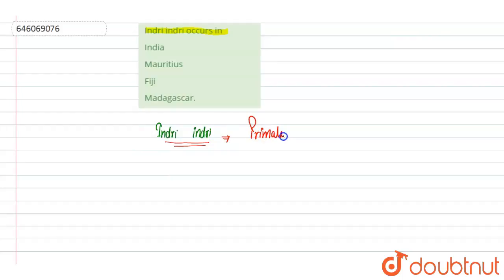It is one of the largest living lemurs. If you'll see the morphological and physical appearance of these lemurs, they have a head and body length of around 64 to 72 centimeters. That is their body length, and their body weight is around 6 to 9.5 kg.